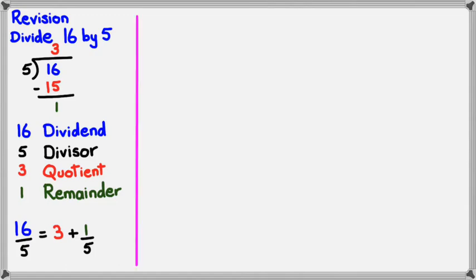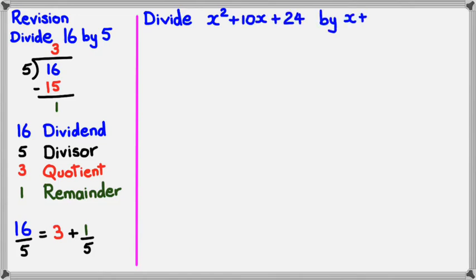What does this mean in terms of algebra for us? I just want to show you an example. Say we want to divide x squared plus 10x plus 24 by x plus 4. Now, what we know is that this part right here is the dividend, and the x plus 4 is the divisor. So, setting it up, it's going to look like this.